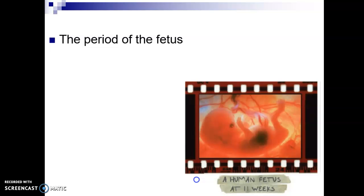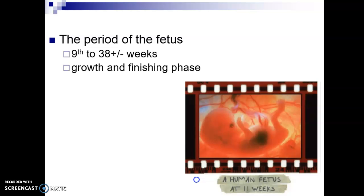The next period of development is the period of the fetus, which spans from nine weeks to about 38 weeks, plus or minus. This is the growth and finishing stage. The majority of the work takes place in the embryo stage, and then the fetus is just refining that work.